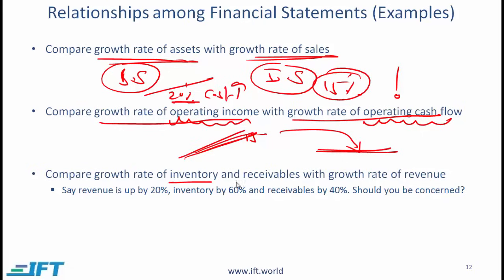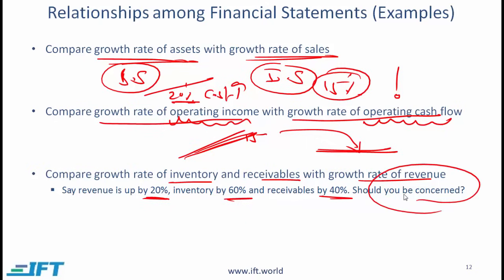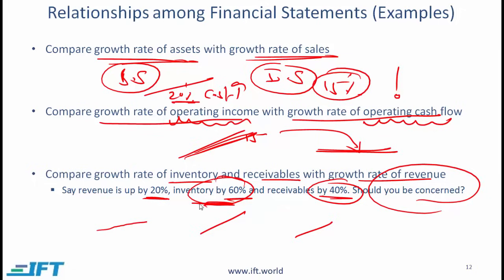Comparing the growth rate of inventory and receivables with the growth rate of sales revenue: if revenue is going up by 20% but inventory is up 60% and receivables up 40%, you should be concerned. Revenue is only growing 20% while inventory and receivables are growing much faster — this may imply a problem with inventory management and receivables management.